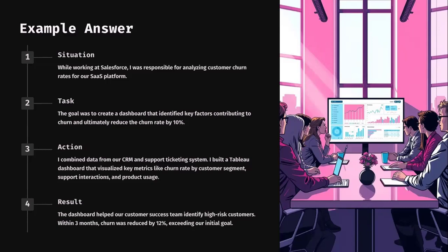For the Result: the dashboard helped our customer success team identify high-risk customers within three months, and churn rate was reduced by 12%. When you speak about effectiveness or impact in terms of specific metrics — like 10% or 12% — that is more appropriate. Giving a vague answer is not recommended. You have to be very specific. Interviewers want to know how much improvement was achieved, so always include numbers to add value to your explanation.